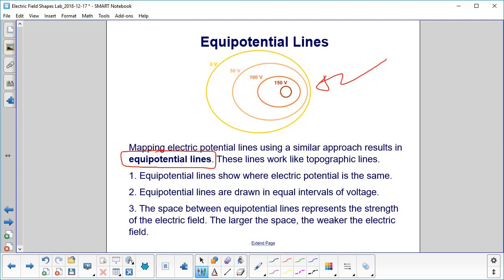These lines do work like the topographic lines. They show where the electric potential is the same, where with the topographic maps it showed you where the height above sea level is the same. They are drawn in equal intervals of voltage.